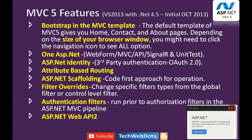The default MVC 5 template gives you a home controller and about pages. Depending on your browser size, you might need to click the navigation icon to see all options — this means the page is Bootstrap-enabled. As you can see in the snapshot, the MVC movie template shows three horizontal lines indicating hidden menu items; clicking them reveals the menu, and the screen size auto-adjusts. That is Bootstrap in the MVC template.